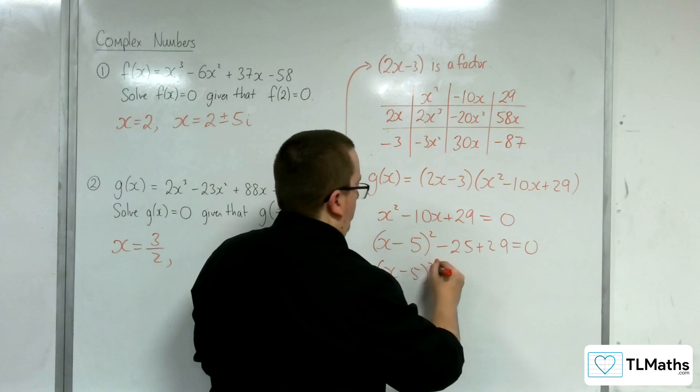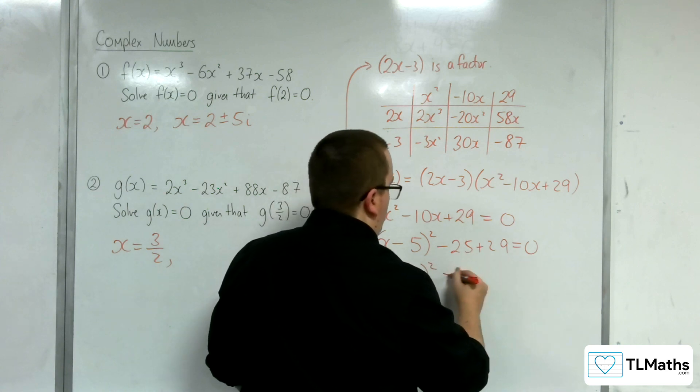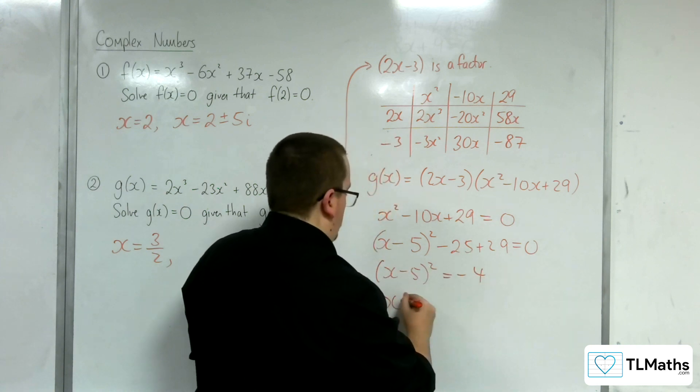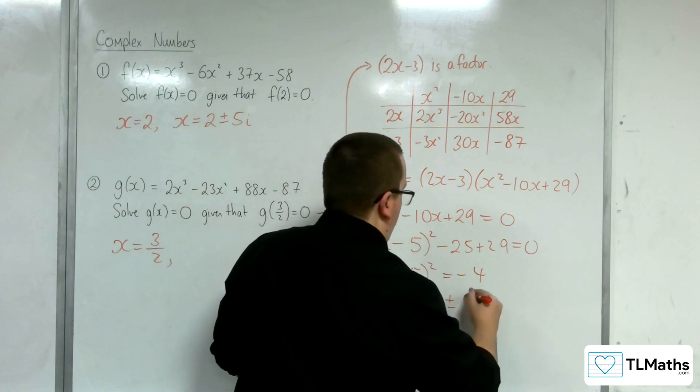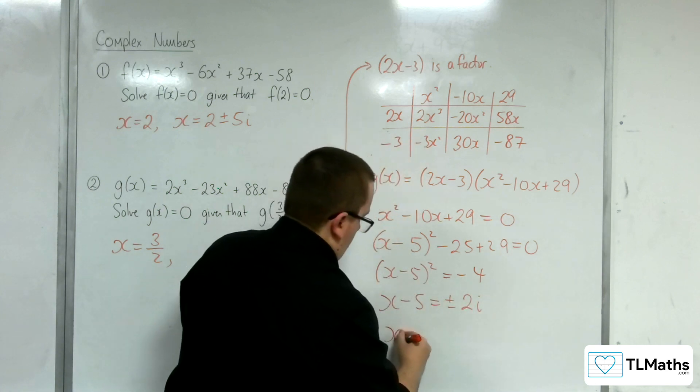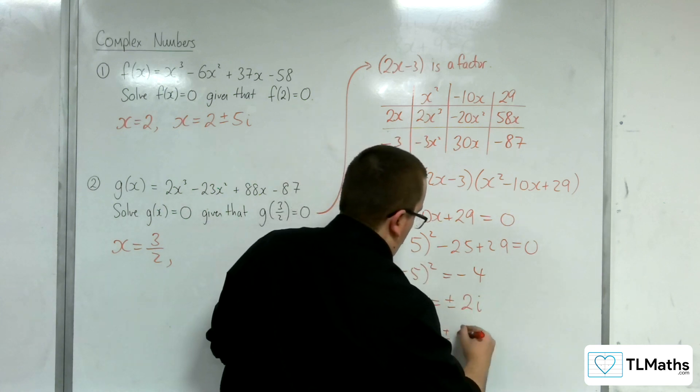So, (x - 5)² = -4. Square root both sides, we get ±2i. And then add 5 to both sides.